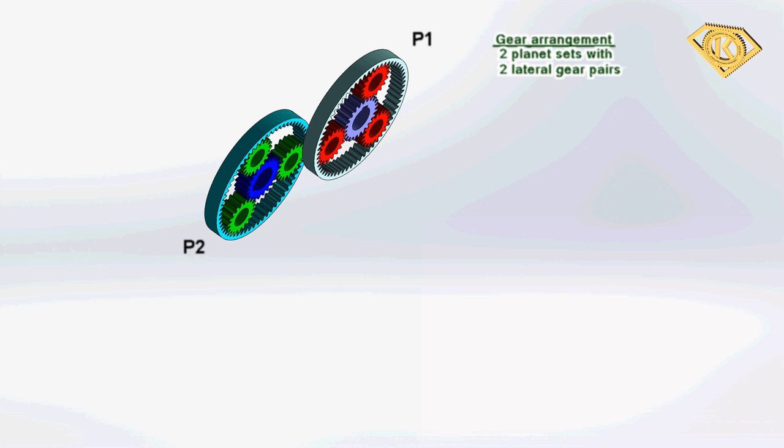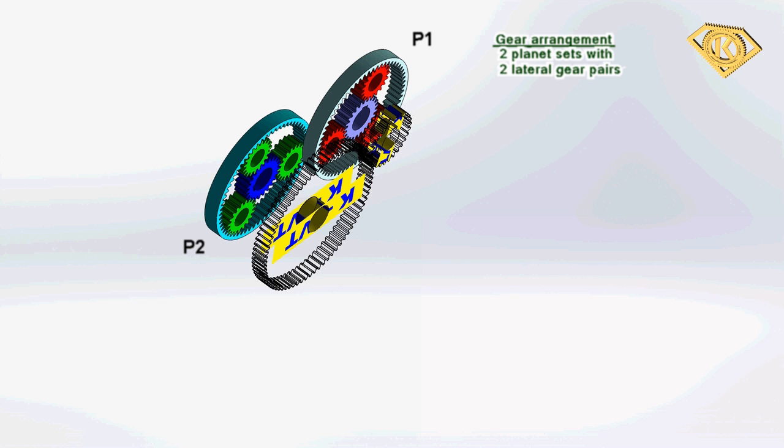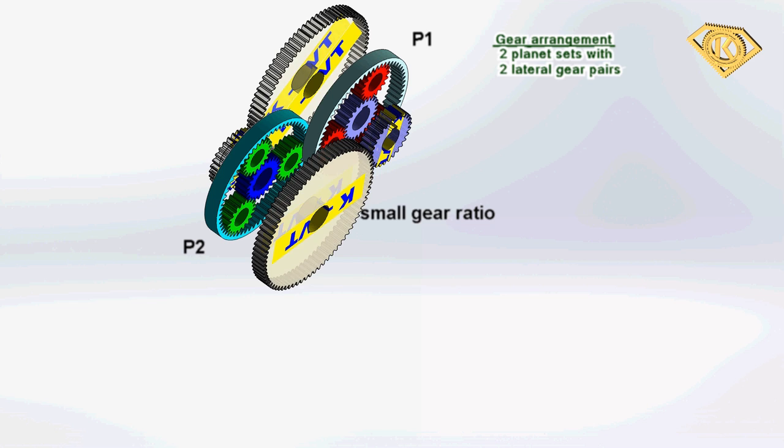This is basically a gearbox arrangement with two differentials connected in series, which are connected on both sides with corresponding gear wheel pairs. They are forming a small and a large transmission ratio side.